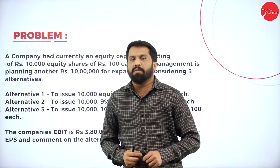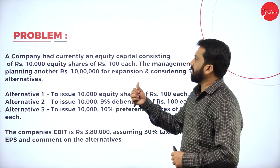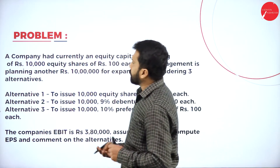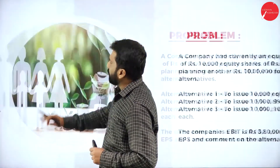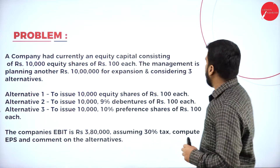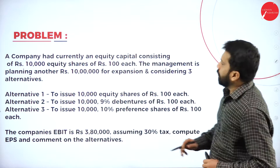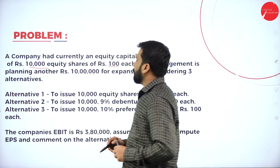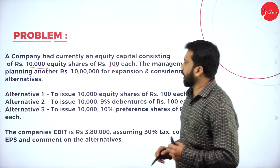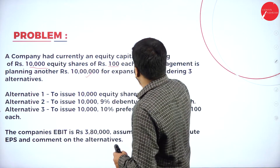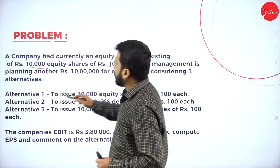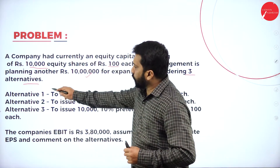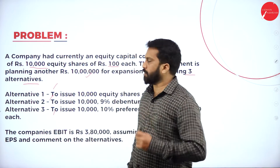Now, in this problem, a company currently has equity capital consisting of 10,000 equity shares of rupees 100 each — that is 10,000 into 100. They need 10,000,000 for expansion and are considering three alternatives.